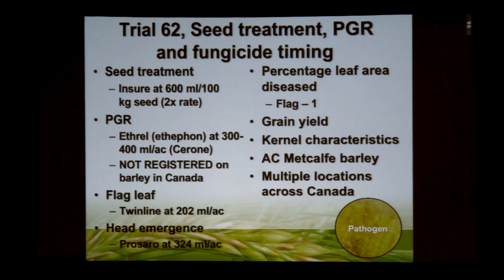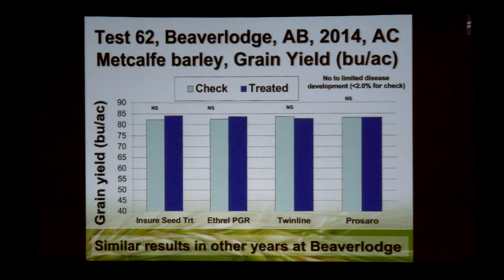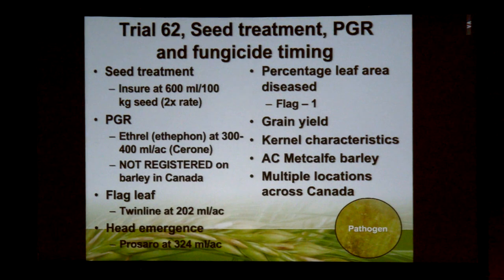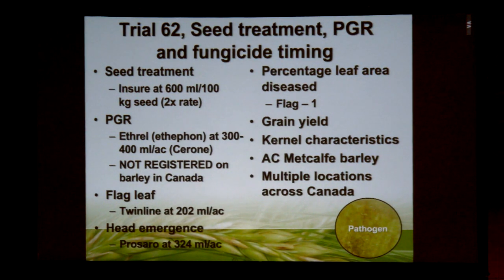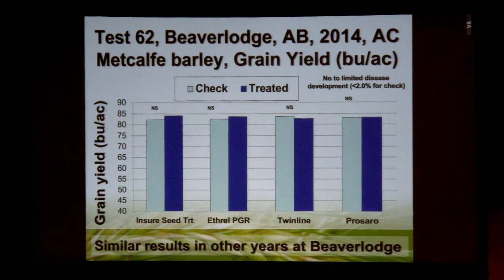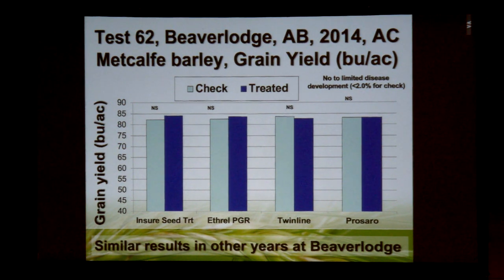We also looked at a plant growth regulator (PGR) — interested in whether a PGR reduces lodging which may increase our level of disease. We looked at flag leaf timing with Twinline, a combination of the triazole and strobilurin fungicides pyraclostrobin and metconazole, and at head emergence timing with Prosaro, a triazole-based fungicide with two components: tebuconazole and prothioconazole. We measured disease levels, yield characteristics, and so on.